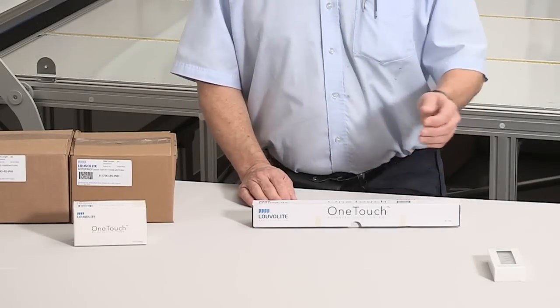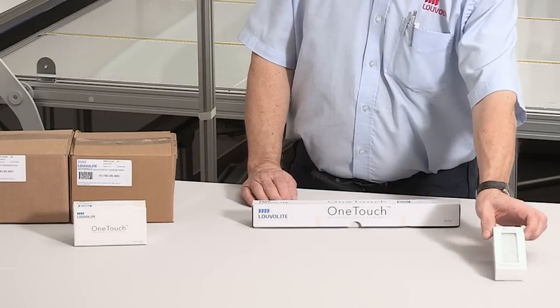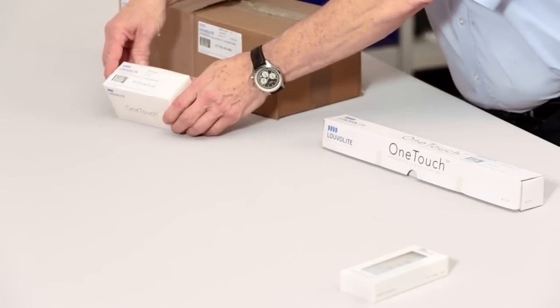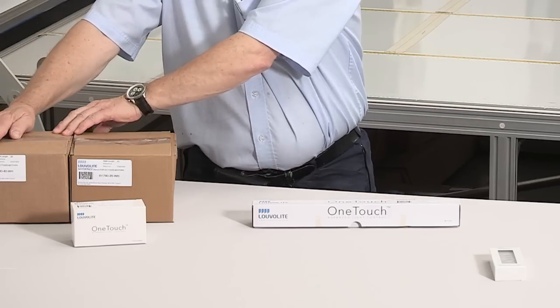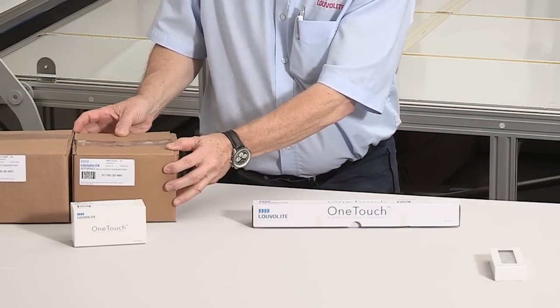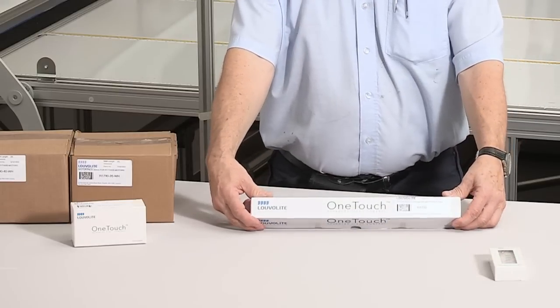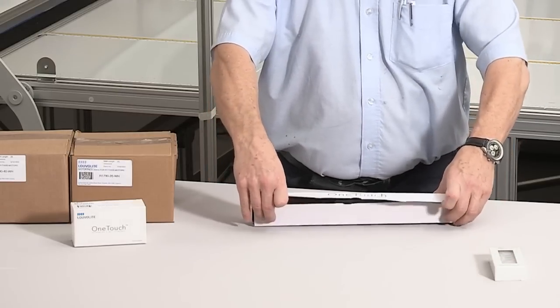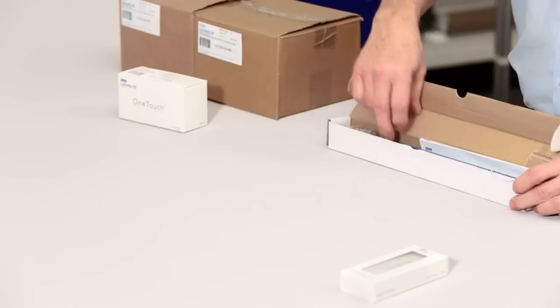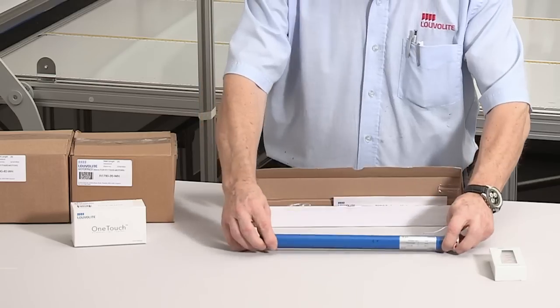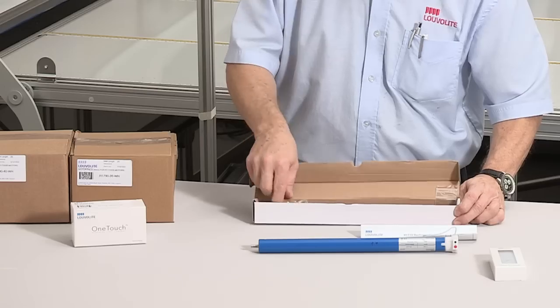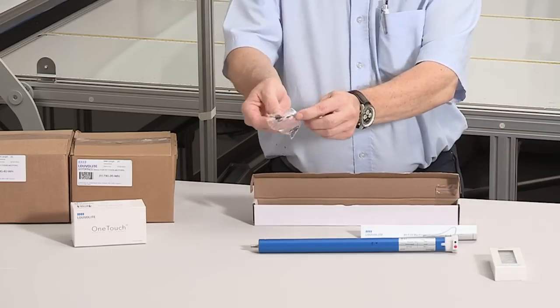You will need the following items: one remote control, one charger, one motor pack for either 35mm or 40mm tube, and one motor. The motor contains the motor and assembly instructions, and one bag containing a circlip for attaching the drive.